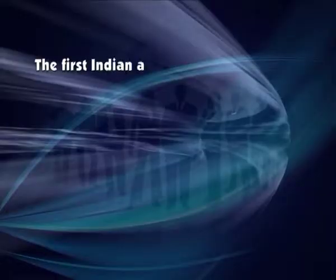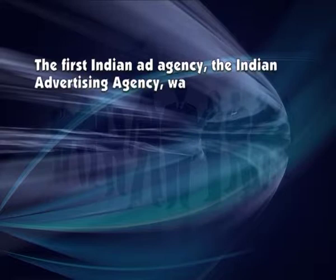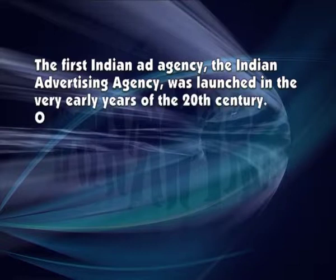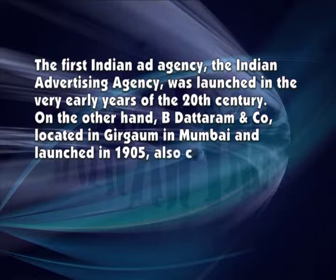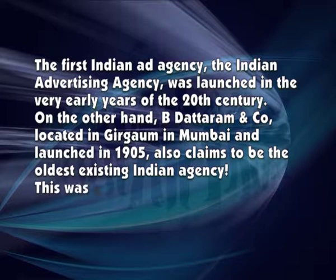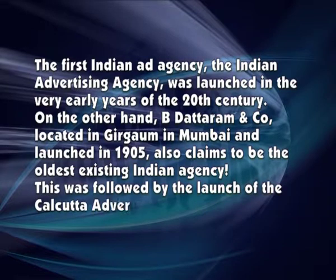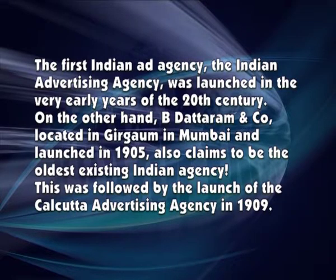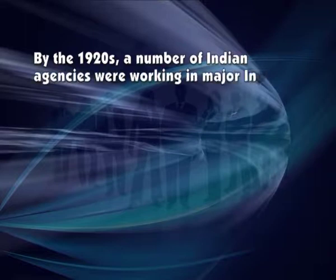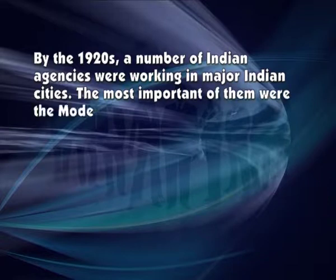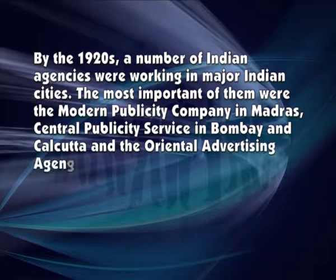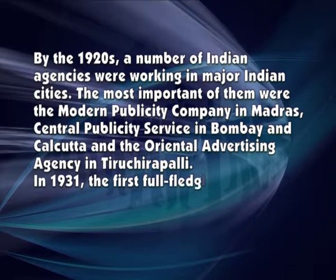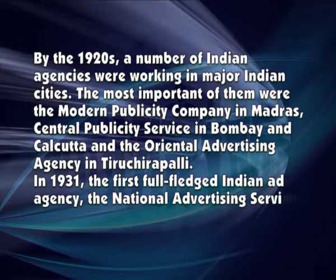Do you know when the Indian advertising agencies started operating? The first Indian ad agency was launched in the very early years of the 20th century. B. Dattaram and Company, located in Girgaon in Mumbai and launched in 1905, also claims to be the oldest existing Indian agency. This was followed by the launch of the Calcutta Advertising Agency in 1909. By the 1920s, a number of Indian agencies were working in major Indian cities. The most important of them were the Modern Publicity Company in Madras, Central Publicity Service in Bombay and Calcutta, and the Oriental Advertising Agency in Tiruchirappalli. In 1931, the first full-fledged Indian ad agency, the National Advertising Service, was established.